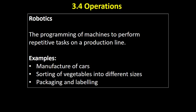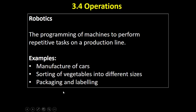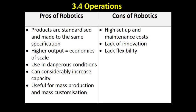Robotics are getting more and more advanced and performing more and more complex tasks. Manufacture of cars is a good example. Often robots are used in sorting tasks, when stuff needs to be arranged into objects of different weights or sizes, as well as packaging and labelling goods.